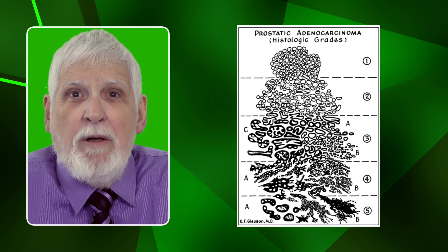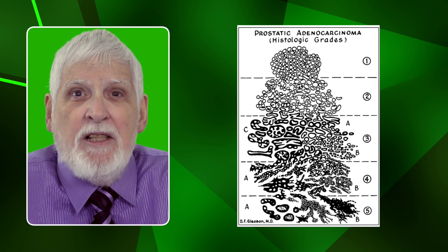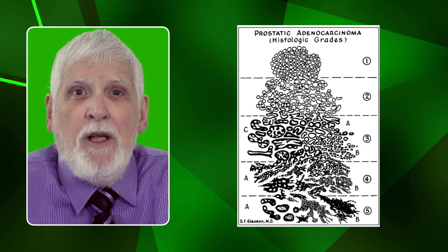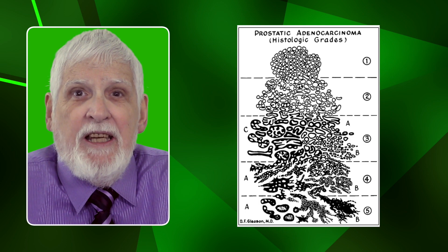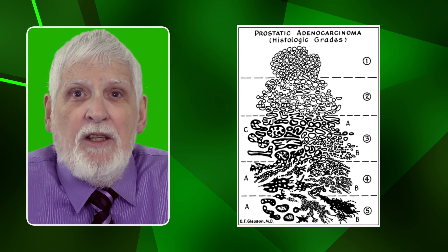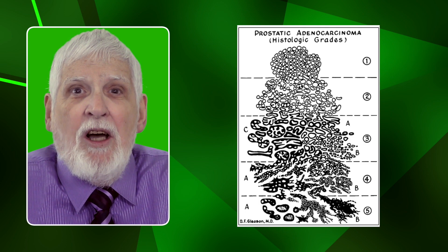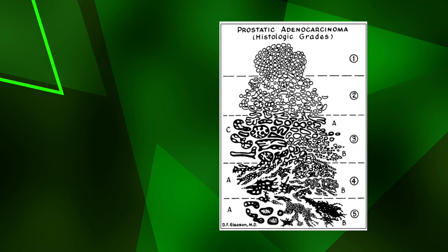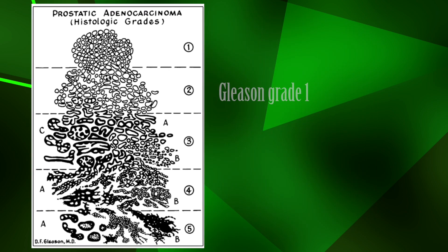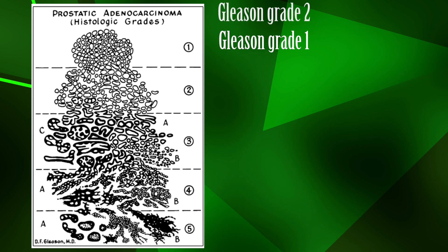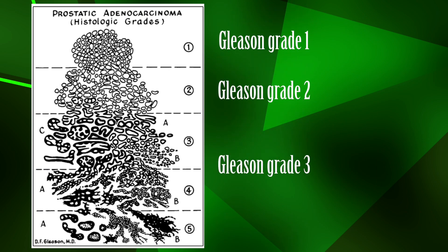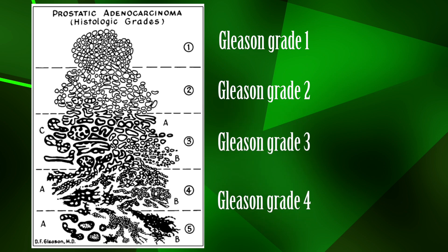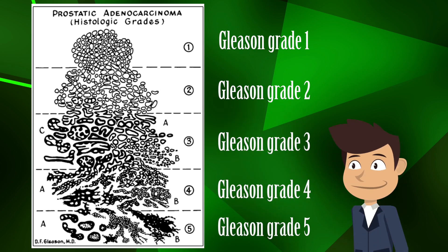Basically, when prostate cells go wrong, the messier they get, the more dangerous they are, and the higher the Gleason grade.